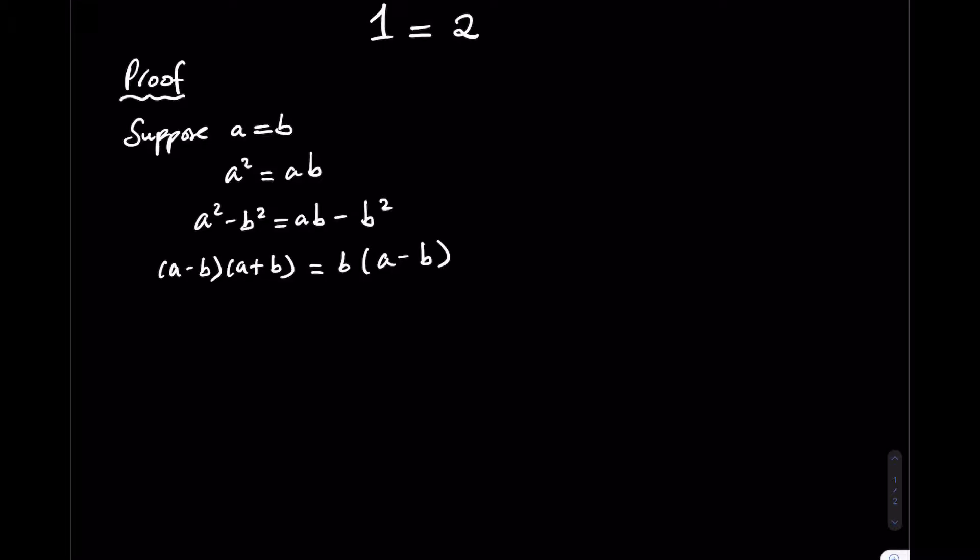Right, I can simplify this equation by dividing both sides by A minus B. So the A minus B's on the left hand side cancel out to give me A plus B is equal to the A minus B's on the right hand side cancel out to give me B.